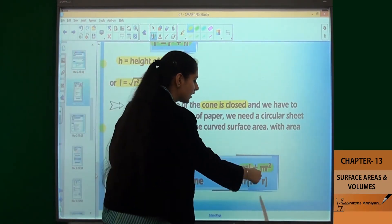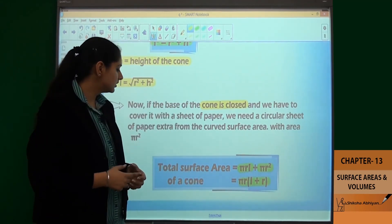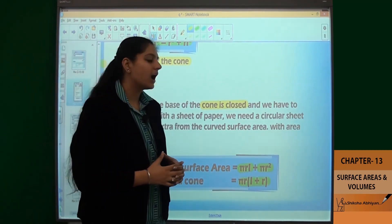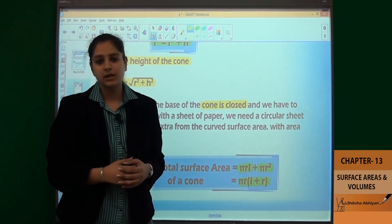Now, taking πr common, we get l + r. So the total surface area of a cone is πr multiplied by (l + r).